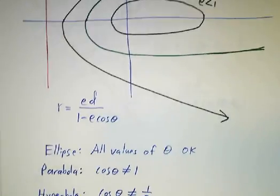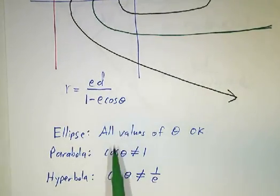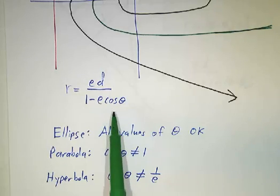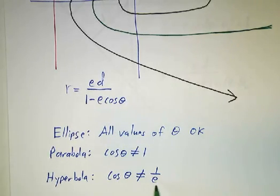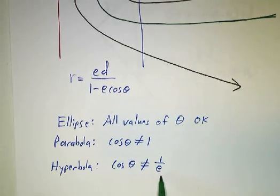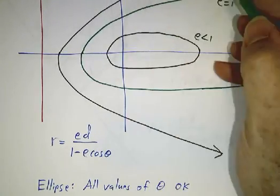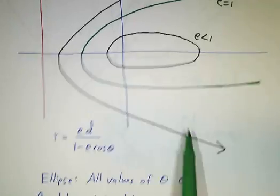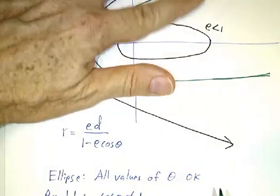For a hyperbola, however, you're dividing by 1 minus e cosine theta, and e is bigger than 1. You can't have cosine theta equal to 1 over e. So you've got a limited range of angles. The hyperbola in the long run is pointing off at some direction, and you never get inside that direction.